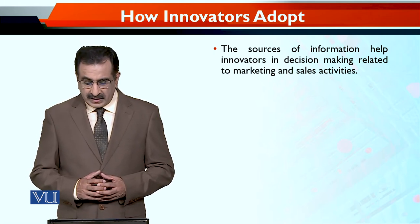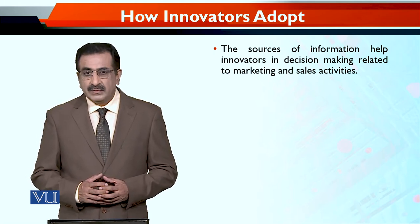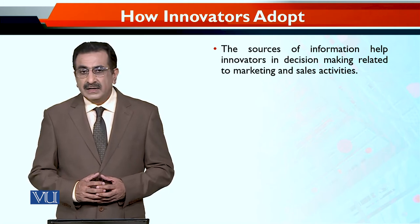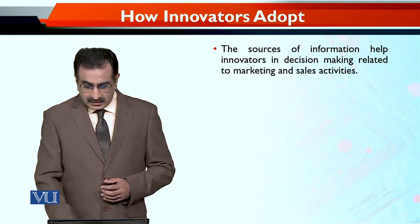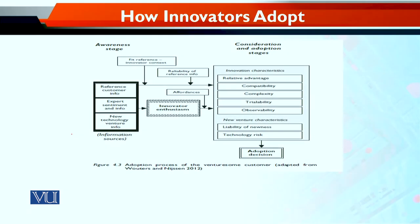So the sources of information help the innovator in sense-making related to marketing and sales activity. There is a model which explains how innovators adopt a new technology. These are certain sources — reference customer information है, जो customer ने पहले इस technology को इस्तमाल किया है, उसके क्या ख्यालात हैं. Then, expert sentiment and information.